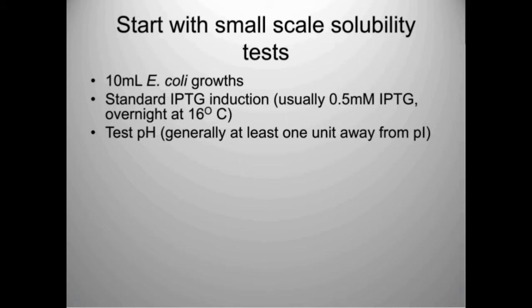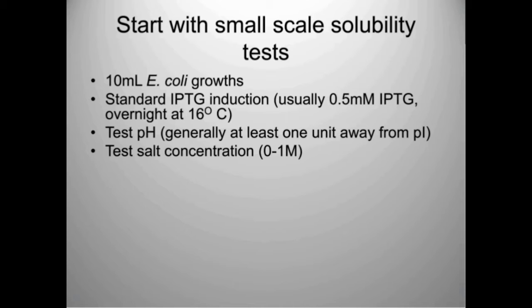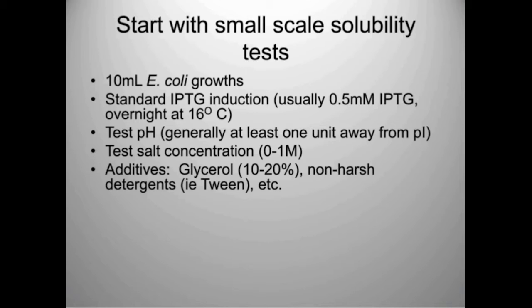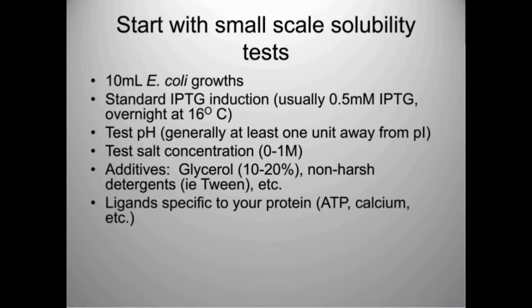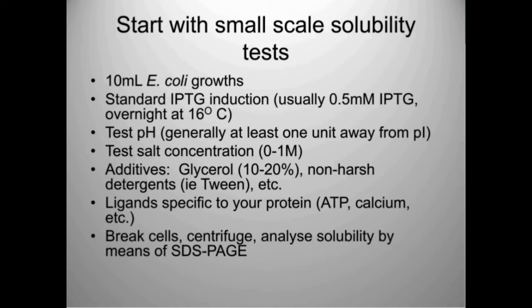Buffer screening should include different pH values—generally at least one unit away from your pI—different salt concentrations up to one molar for RNA or DNA binding proteins, and additives like glycerol or non-harsh detergents like Tween. It's good to know your protein's function: does it bind ATP or calcium? Ligands can help with solubility. Note that if you have an RNA or DNA binding protein, the nucleic acid can be difficult to separate and won't necessarily show on SDS-PAGE.